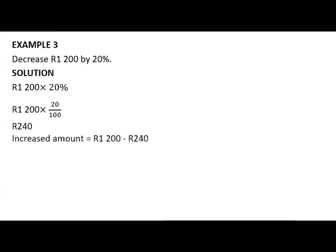How do we decrease R1,200 by 20%? You will first find 20% of R1,200. And 20% of R1,200 is the same as R1,200 times 20 divided by 100. Put that into your calculator. It will give you R240. Then you will take that R1,200 and subtract R240. R1,200 minus R240 will give you R960.